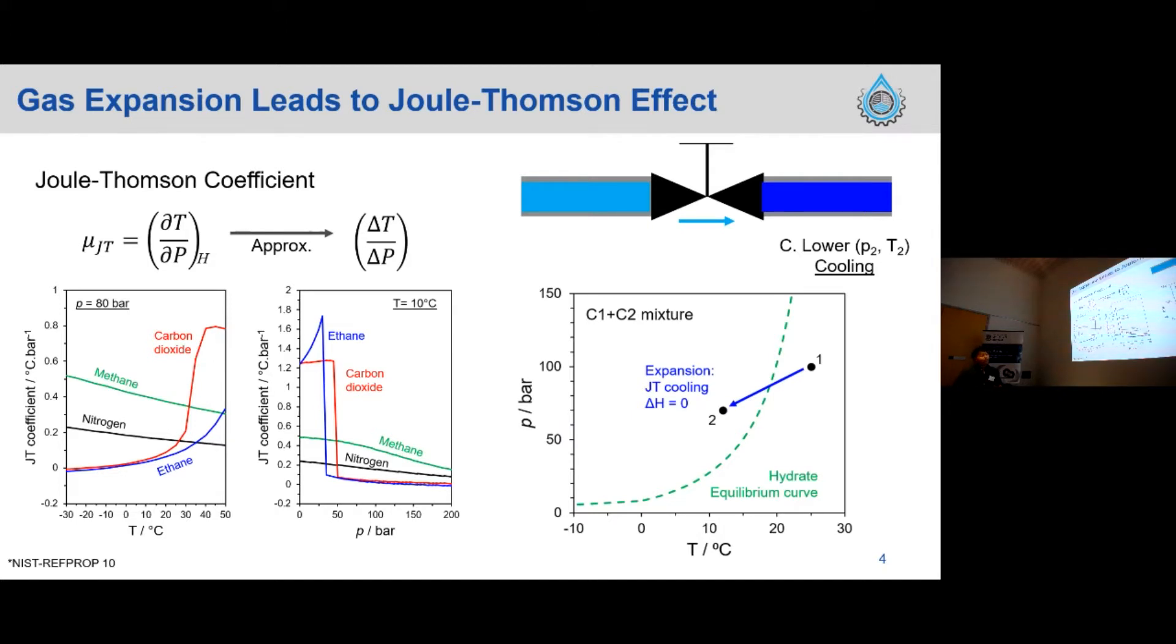So apply these to an oil and gas system, for example, C1 and C2 mixture. The first state is outside the hydrate stability zone. But when you experience the Joule-Thomson cooling, the pressure drop and temperature cooling, you can find this will be within the hydrate stability zone. So now we need to be concerned about this kind of hydrate plugging hazard.